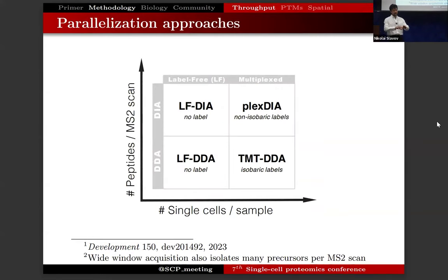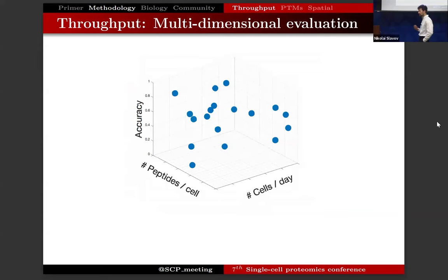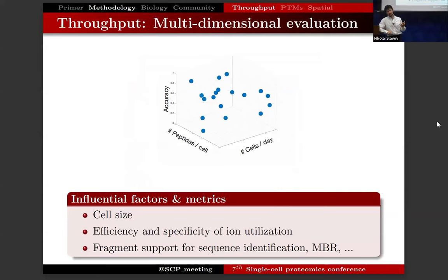Here is a big picture summary of different mass spectrometry methods that do different levels of parallelization — parallelizing either sample analysis or peptide fragmentation and data acquisition. The throughput sounds like a simple thing, but in reality evaluating and benchmarking throughput is quite complex. It's a high-dimensional metric because it is not only the number of cells per day, but also the depth of coverage, the accuracy, and many additional metrics.